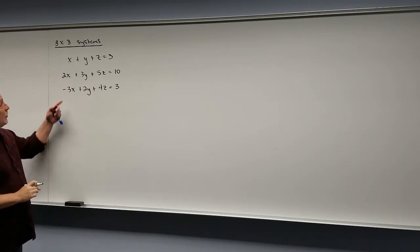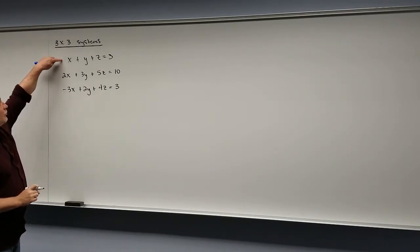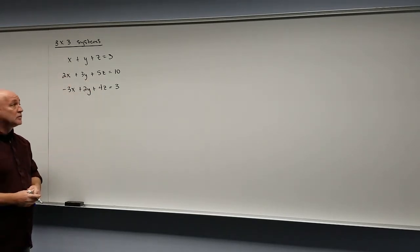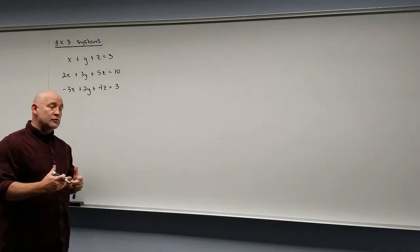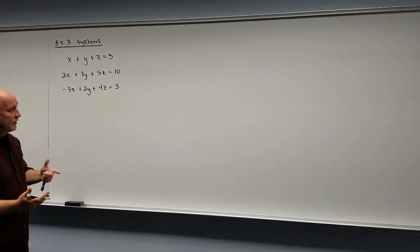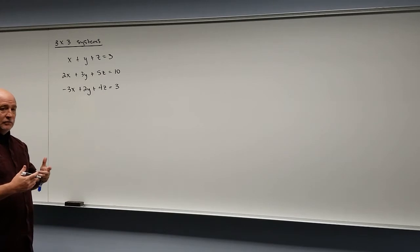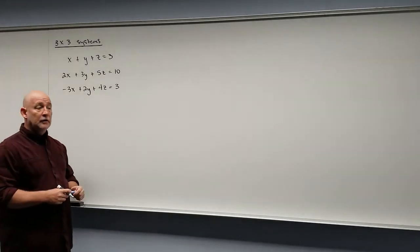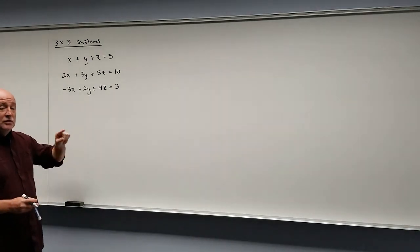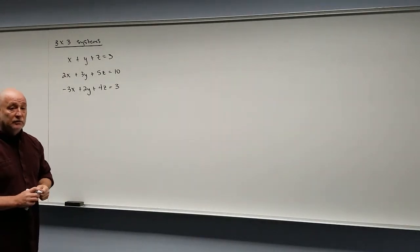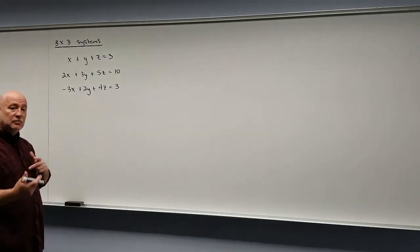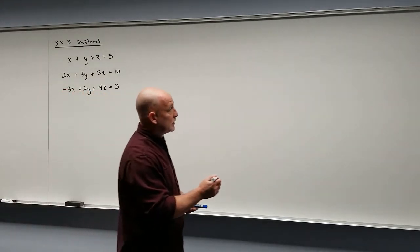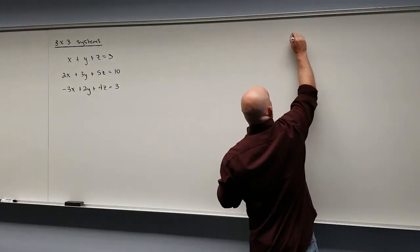Here's an example of a 3 by 3 system. Notice we have 3 equations with 3 variables in the system. So how do we solve something like this? We're going to use our addition and elimination method — it's generally the easiest one to use in this case. We're just going to have to do it more times than we have in the past.